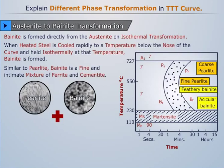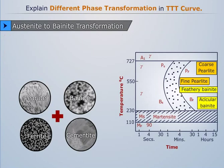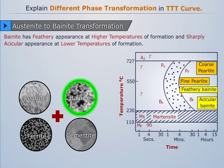Similar to pearlite, bainite is a fine and intimate mixture of ferrite and cementite. Bainite has feathery appearance at higher temperatures of formation and sharply acicular appearance at lower temperatures of formation.